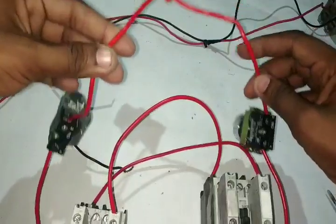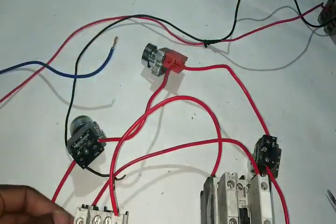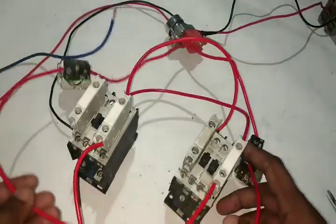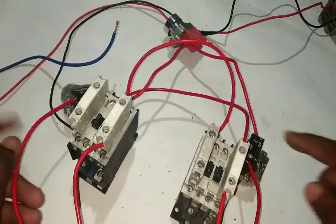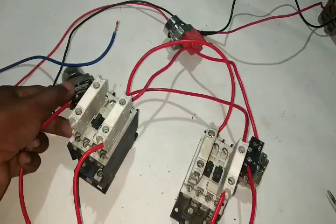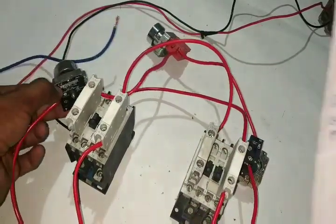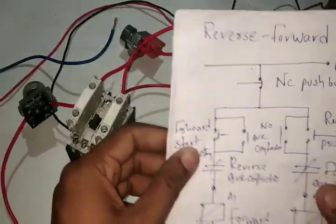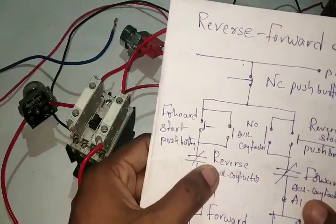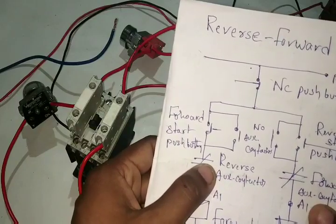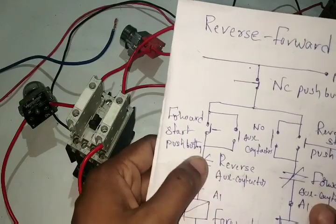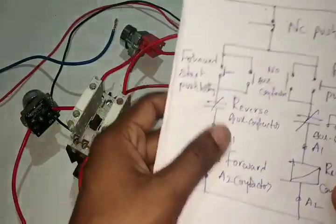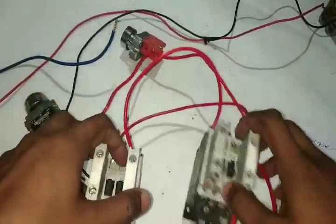Let's take a reverse button. Reverse button, NC push button, reverse contact button, reverse contact button, reverse auxiliary contact button, forward contact button, A1. So A1.